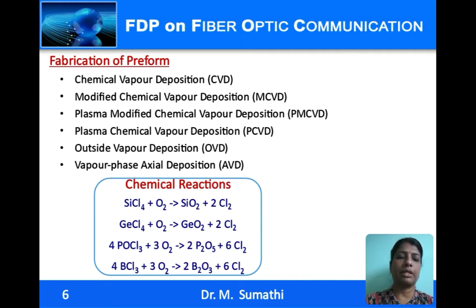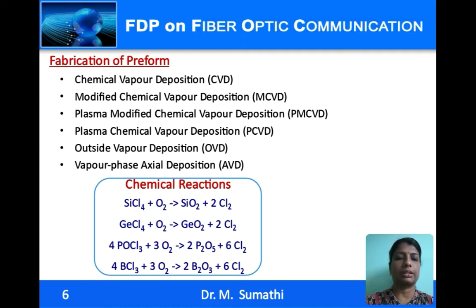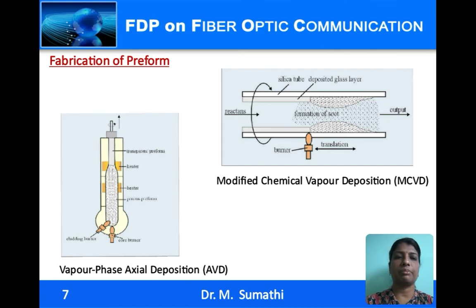The chemical reactions for fabrication of the preform involve oxidizing the respective metal halides to form the oxides, as shown for different materials. The materials and their concentrations are chosen based on whether the dopant is for the core or the cladding. The different methods for fabrication of the preform are: chemical vapor deposition (CVD), modified chemical vapor deposition (MCVD), and outside vapor phase axial deposition (VAD).